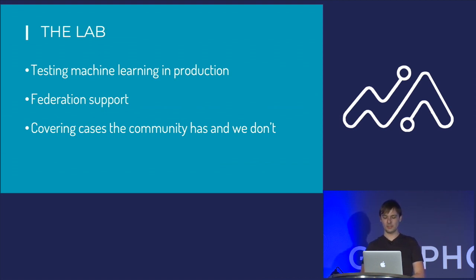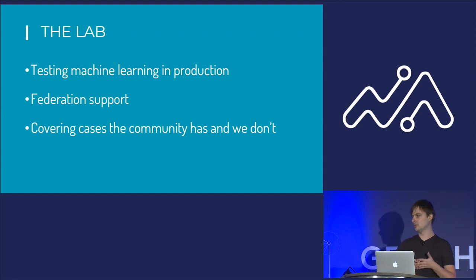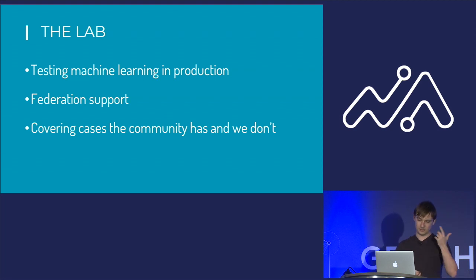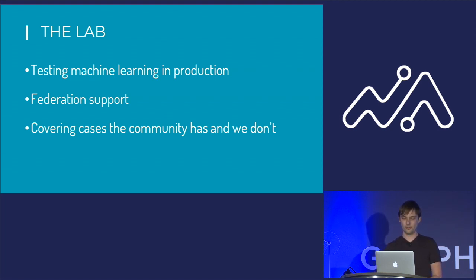What we're doing right now is testing machine learning in production. We get a bunch of requests to our server and we're trying to use machine learning to predict in advance what data our users will be querying. With that, we can try to do a dynamic caching mechanism for our fields in advance — all without reloading the server, because you don't need to reload the schema to get the caching time for all of your fields. We're also trying out federation support, though we haven't covered all the cases the community has, since schemas between different companies vary.